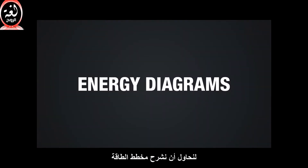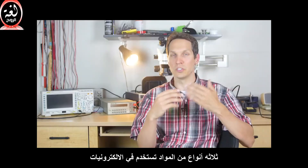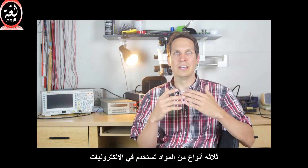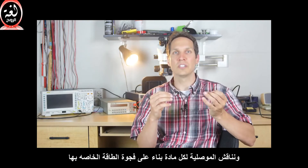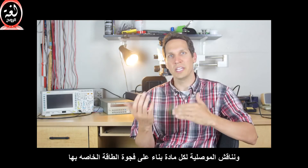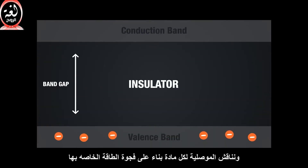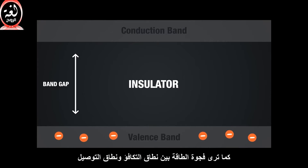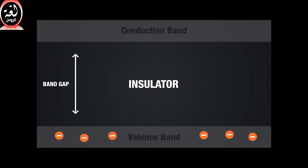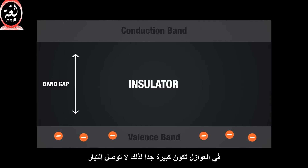Let's try to examine the energy diagram of three types of materials used in electronics, and discuss the conductivity of each material based on their band gap. As we can see, the band gap between the valence band and conduction band in an insulator is really big. This is why it doesn't conduct current.